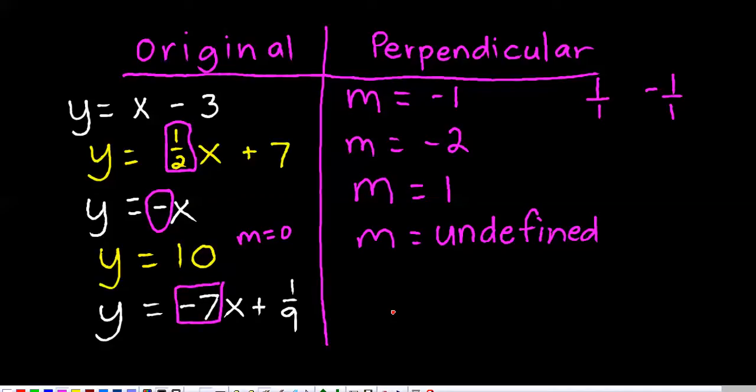And this one here, the slope is negative 7, so a line that's perpendicular would have a slope of positive 1/7. I thought I'd throw in some tricky ones for you.